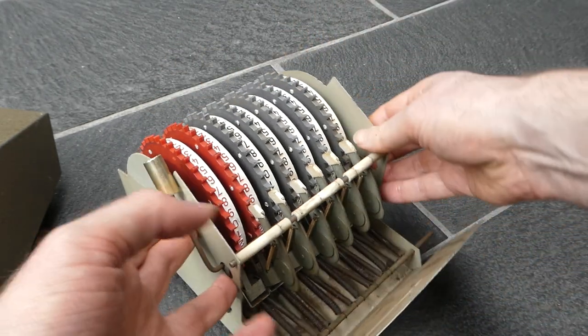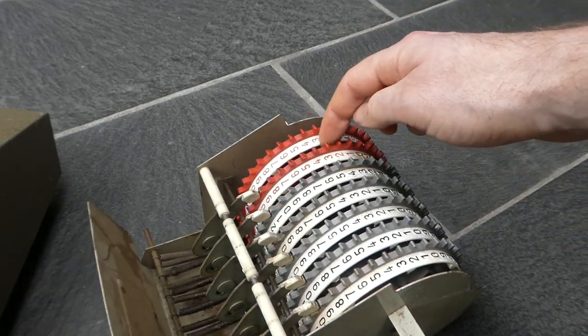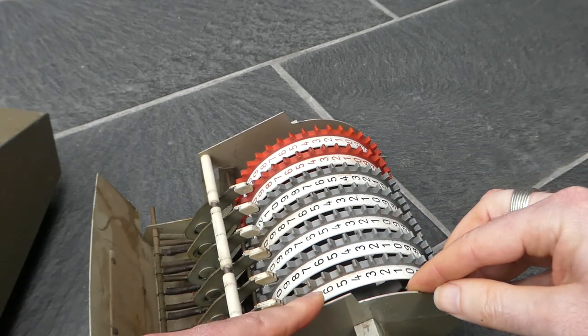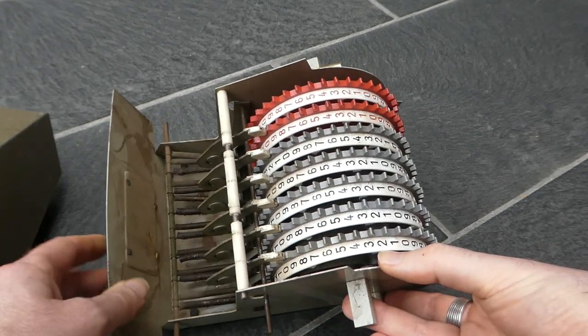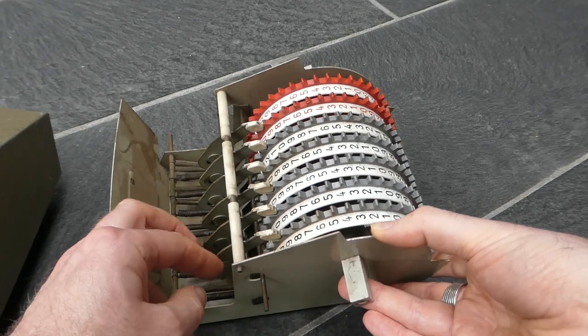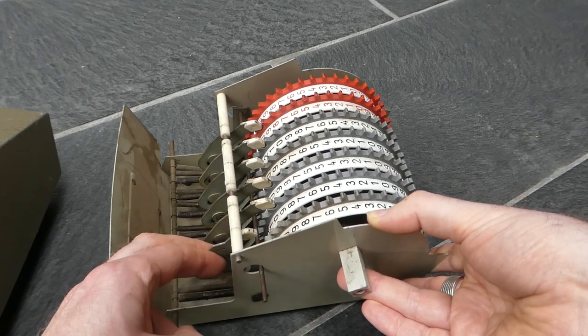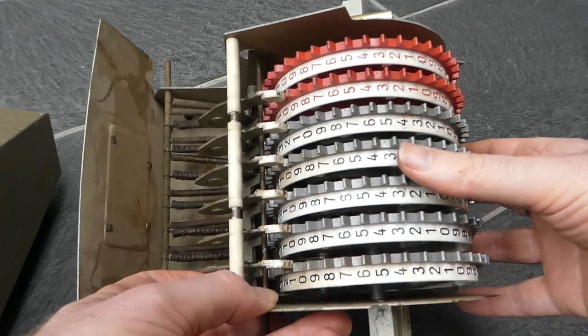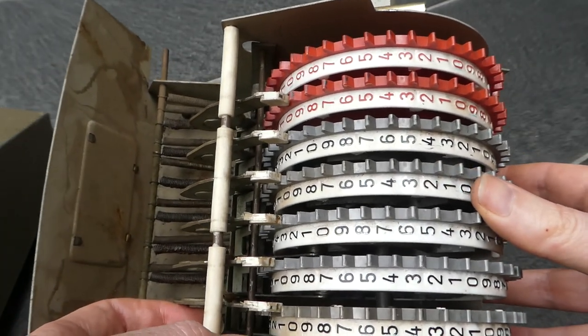The arm gets pushed back because there's a cam wheel on this side of each number wheel. It's sort of on the inside here. The cam follower is on a rod that hinges back and pushes the arm back. It's very difficult to see here, but maybe you can just about see in between the wheels.